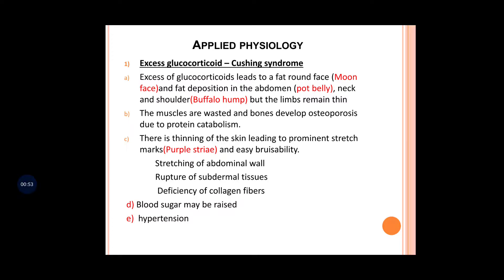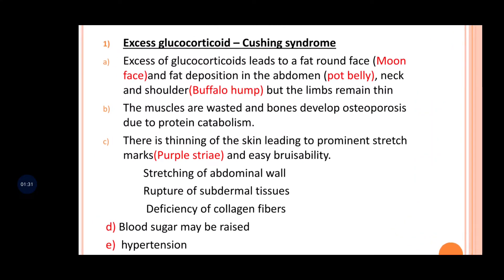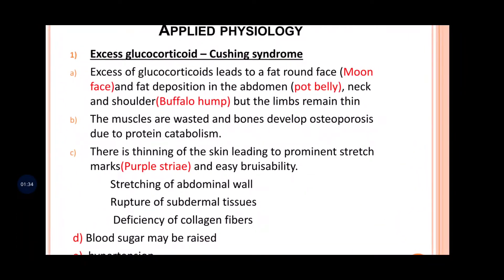With excess glucocorticoids, the muscles are wasted because protein catabolism is occurring. The bones develop osteoporosis as a result of protein catabolism — the bones become weak, muscles are wasted, and there is thinning of the skin leading to prominent stretch marks known as purple striae. The person can also be easily bruised.